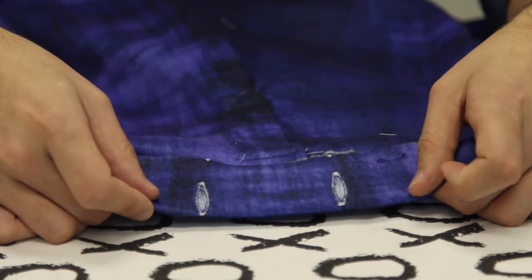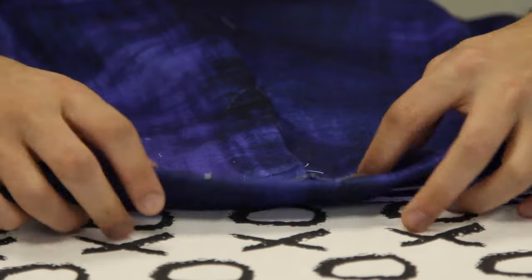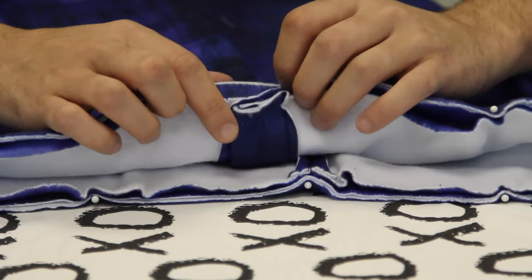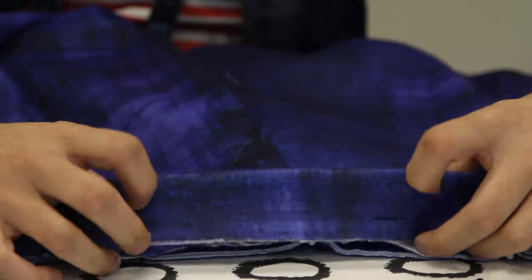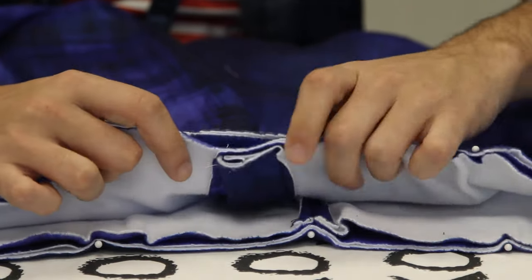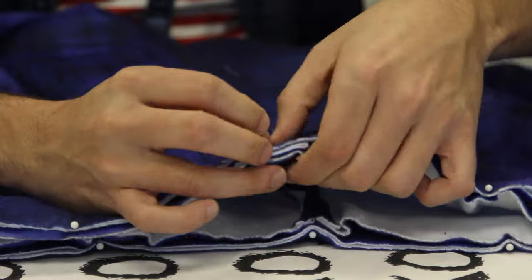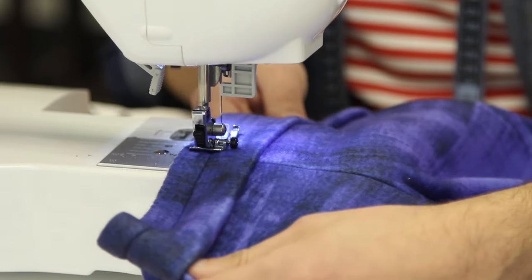Now it's time to pin the waistband and pants right sides together, aligning the lower edges of the waistband with the top edge of the pants. Make sure the buttonholes are facing the front center of your pants and the raw edges are up. Stitch the waistband to the pants.